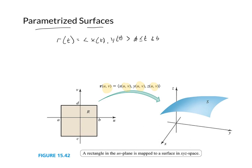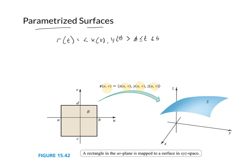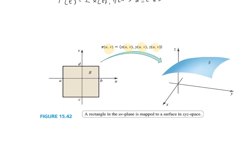The most basic example is a rectangle in the UV plane mapping to a surface in XYZ three-dimensional space. Points in the UV plane — take a point here, take a point here — and that maps to some point in three-dimensional space. We need U and V to generate a surface in space.